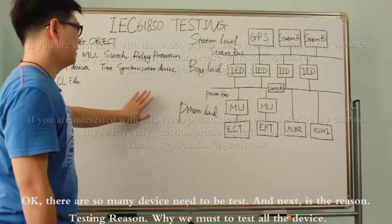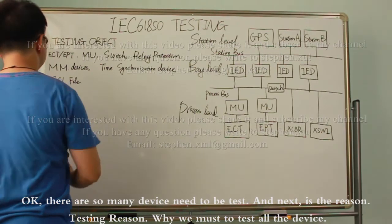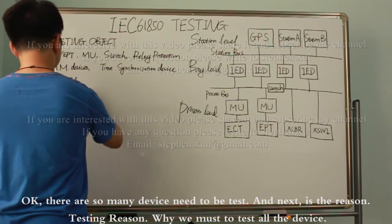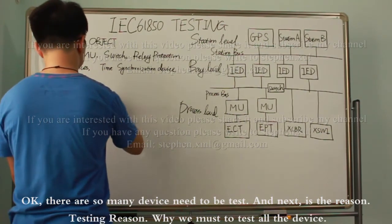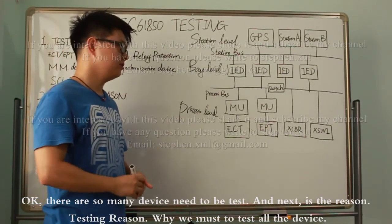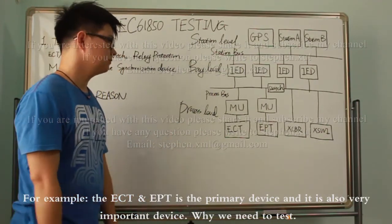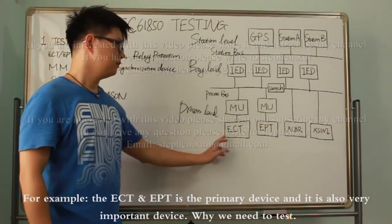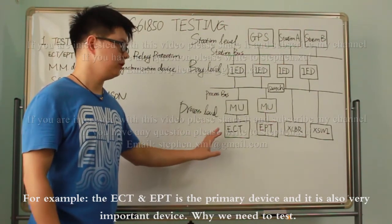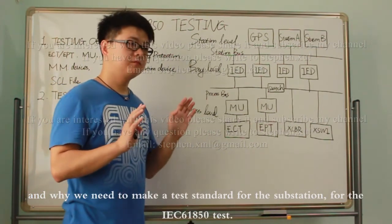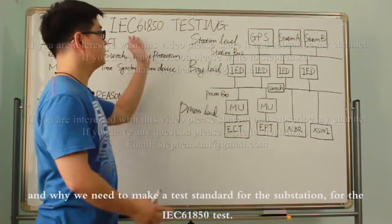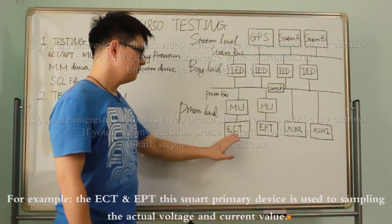There are so many devices that need to be tested. Next is the testing reason — why we must test all these devices. For example, the ECT and the EPT are primary devices, and they are very important. Why do we need to establish a test standard for the IEC 61850 substation?